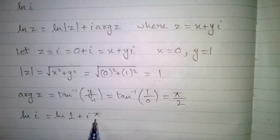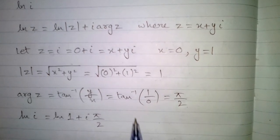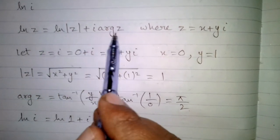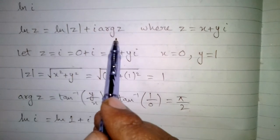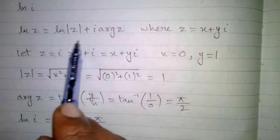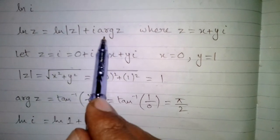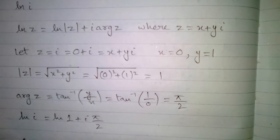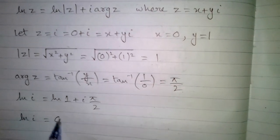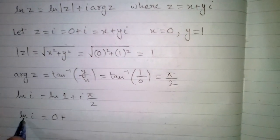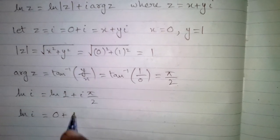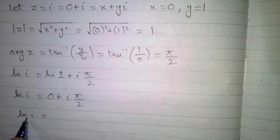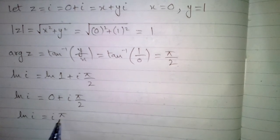Now, ln of iota is equal to ln of mod of z plus iota times argument of z. Putting in the value of z as iota, the modulus of iota is 1 and the argument of iota is π/2. Since ln of 1 is 0, we have ln of iota is equal to 0 plus iota times π/2, or simply ln of iota is equal to iota times π/2.